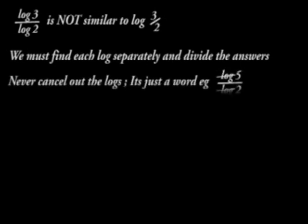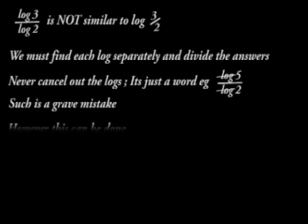For example, log 5 over log 2 must never be cancelled as such. Such will be a grave mistake. However, this can be done. Log 3 over log 3 can cancel out to give 1.